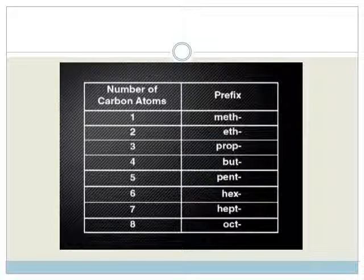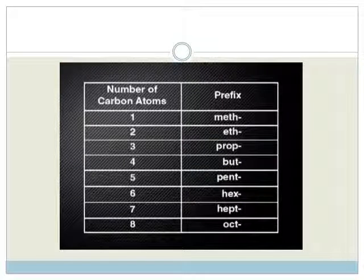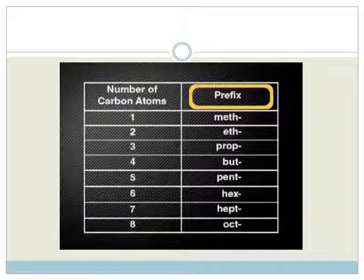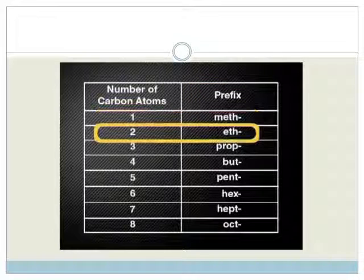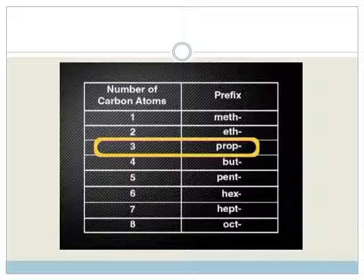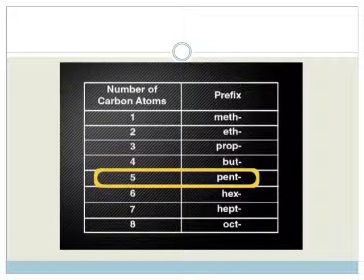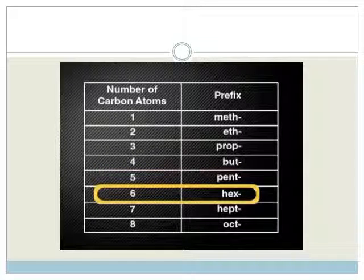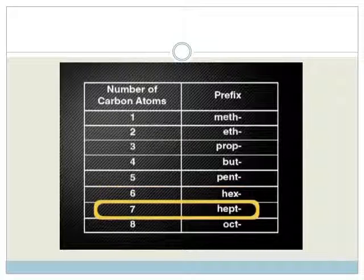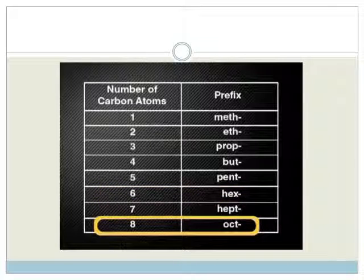The IUPAC system works like this. In any carbon molecule, we first count the longest continuous carbon chain. This gives us the first part of the name, sometimes called the prefix. One carbon is meth, two carbons is eth, three carbons is prop, and so on. After five carbons, the Greek system of noting numbers takes over. You may recognize this from maths, where a hexagon has six sides. Seven is hept, and eight is oct.